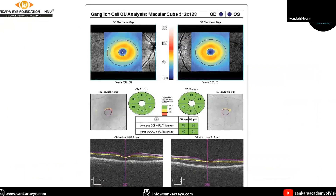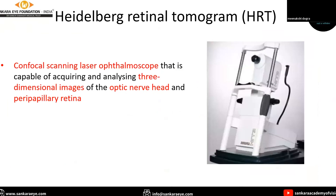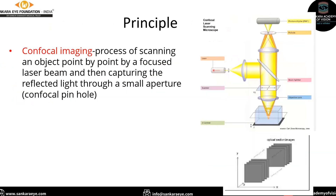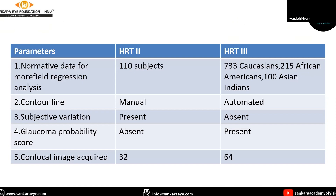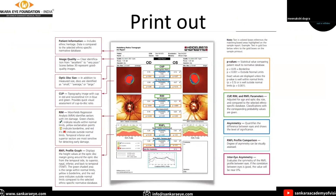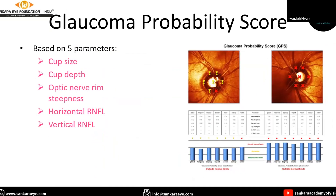These are the optic nerve head analysis parameters and this is how the ganglion cell macular cube analysis looks like. Moving on to HRT, that is Heidelberg Retinal Tomography, it is a confocal scanning laser ophthalmoscope capable of acquiring and analyzing a three-dimensional image of the optic nerve head and peripapillary retina. The principle is that of confocal imaging. A contour line is drawn at the scleral rim inner border and a reference plane is automatically generated. Anything below the reference plane is a cup and above is a rim. HRT2 differs from HRT3 in that the contour lines in HRT2 are drawn manually, whereas in HRT3 they are automatically generated. HRT3 also gives the glaucoma probability score.